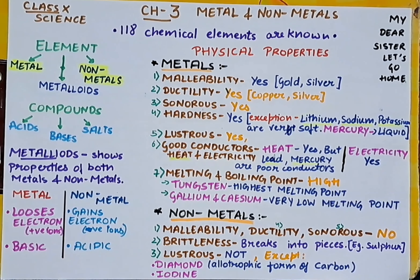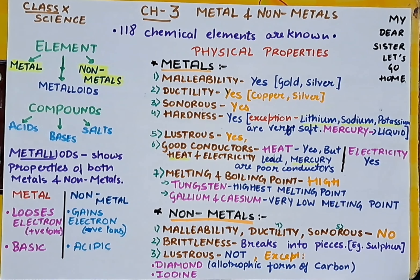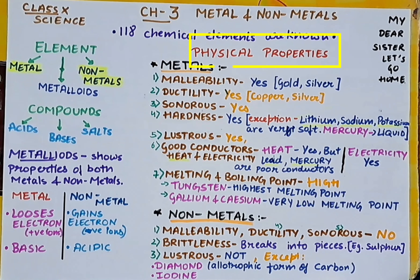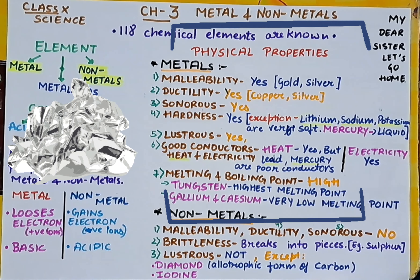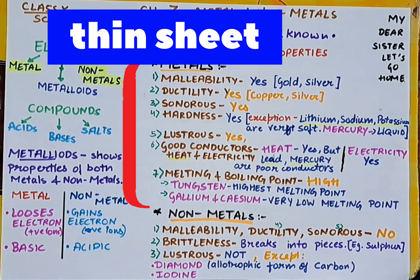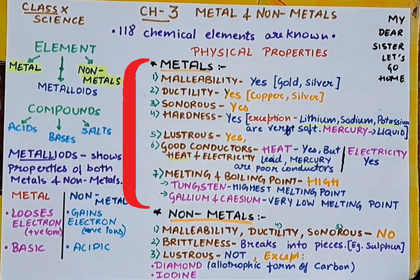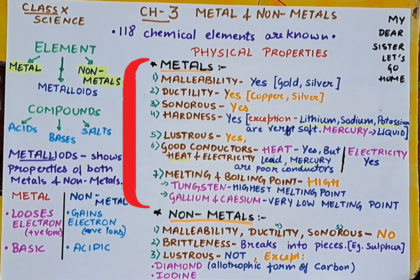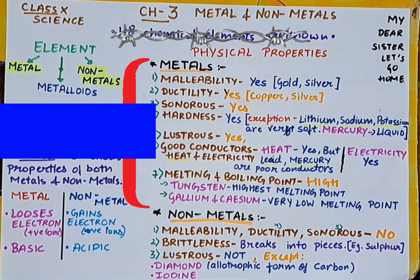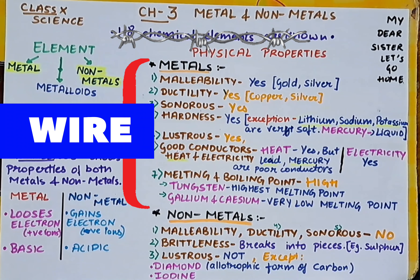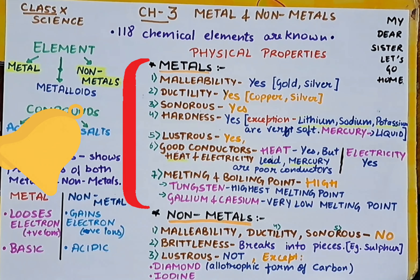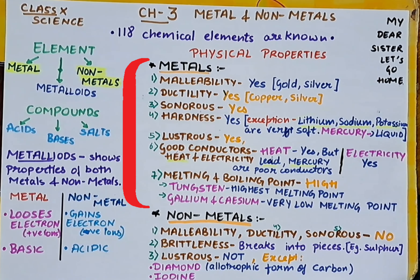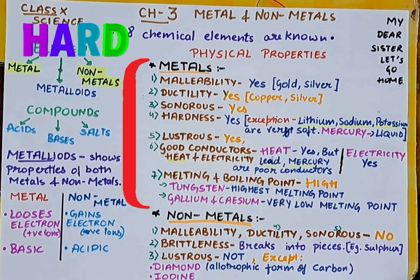Talking about the physical properties of metals: metals are malleable — gold and silver are the best malleability examples. Metals are ductile — copper and silver are good examples. Metals are sonorous — they create a ringing sound when hit hard.